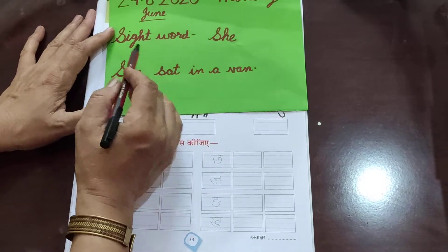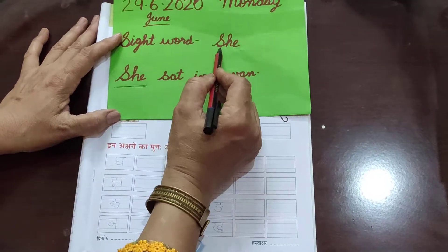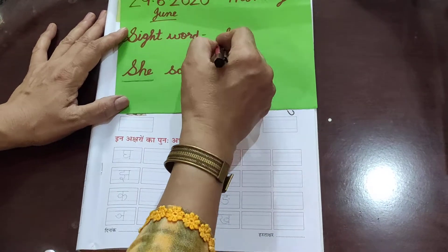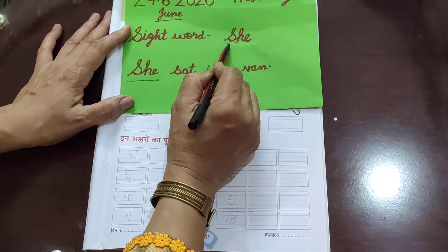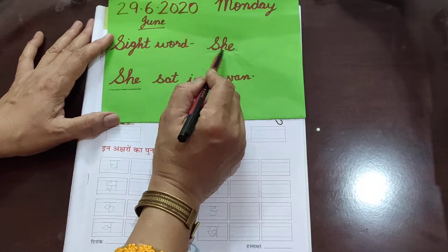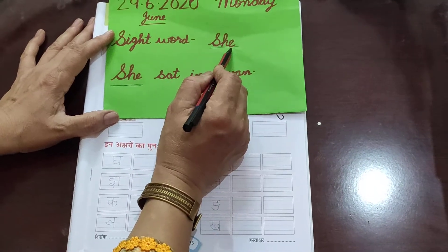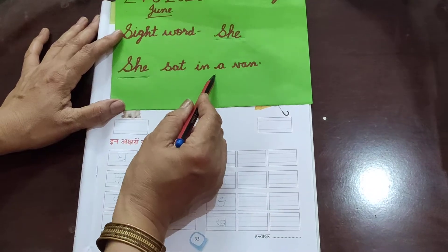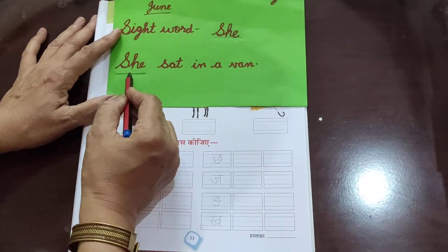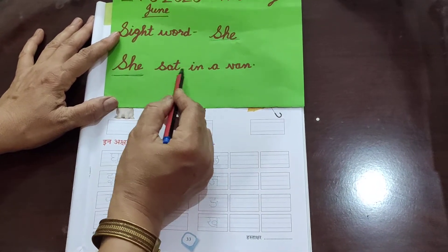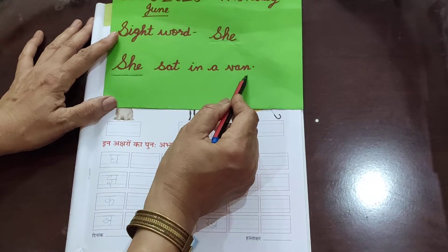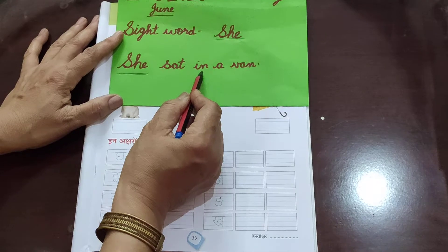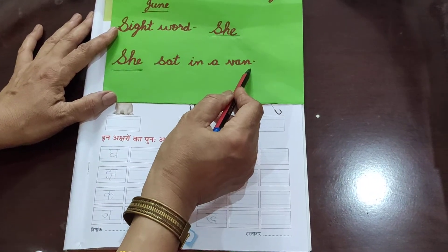Now speak out the sight word. The sight word is 'she.' We use the look and say method for sight words. She. And the sentence is: she sat in a van. Repeat after me, babies: she sat in a van. Very good.